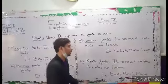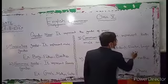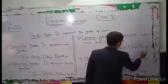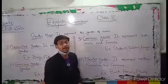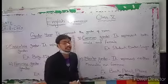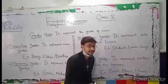The third type is Common Gender. It represents both male and female. For example: Student — can be male or female. Doctor — can be male or female. Lawyer — can be male or female.